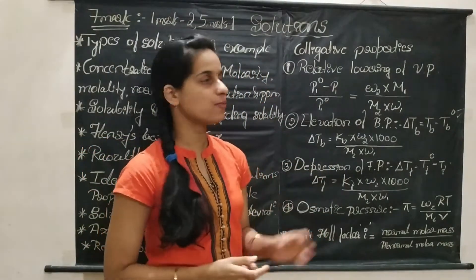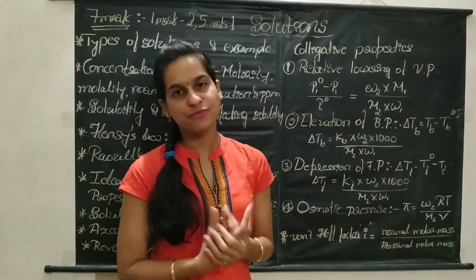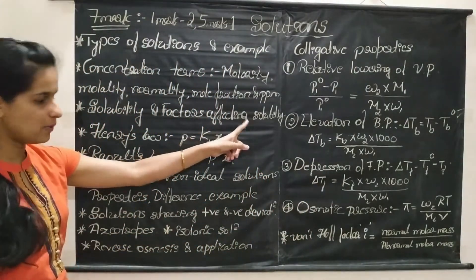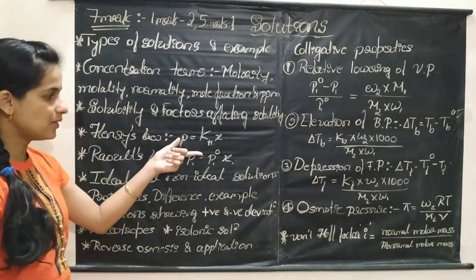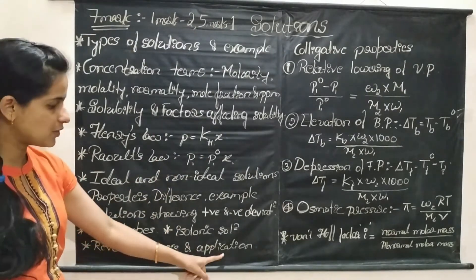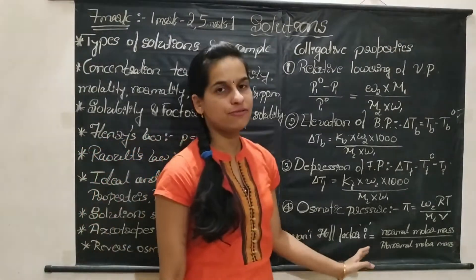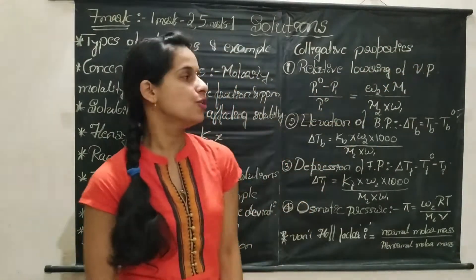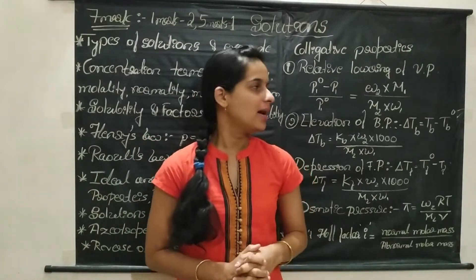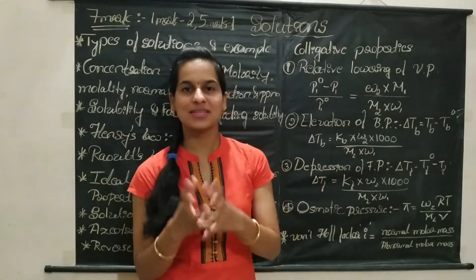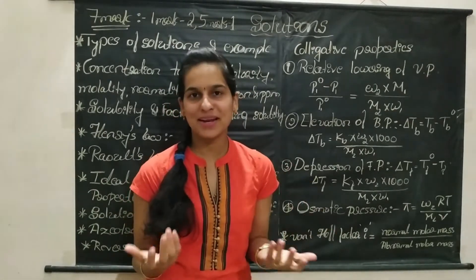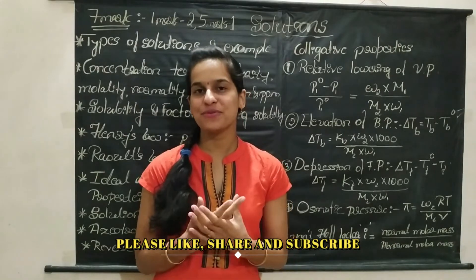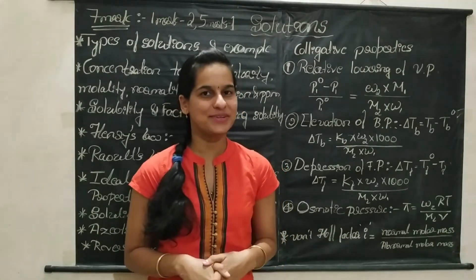Friends, these are the important topics from the solution chapter. Please remember: factors affecting solubility, difference between ideal and non-ideal solution, mathematical expressions and statements of Henry's and Raoult's laws, reverse osmosis and its application, azeotropes, and Van't Hoff factor are important topics, and one numerical from colligative properties is a definite question. Please solve different numericals and practice them. If you have any doubts, please write in the comment section. Please like this video, share it with your friends, and subscribe to my channel for more chemistry videos. Thank you.